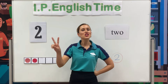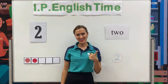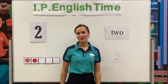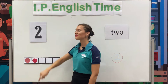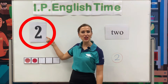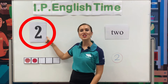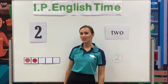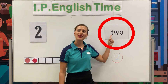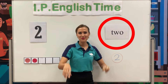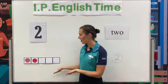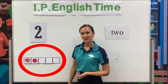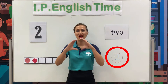Can you repeat after me? 2. Yes, well done. So, I can show you number 2 in different ways. Let's have a look. I can show you number 2. It's number 2. I can show you number 2 as a word. Number 2. I can show you number 2 in a 5 frame. 1, 2. And I can show you number 2 in a red circle.